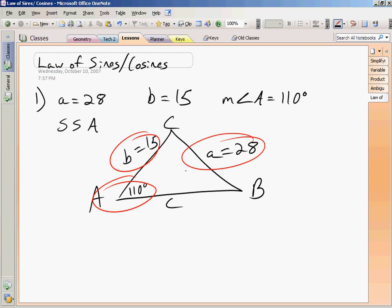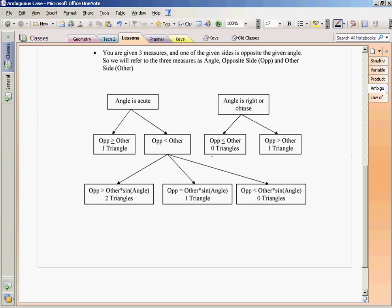So here I'm given side a, which is opposite the given angle, and then b, which is just going to be, in this example, the other side. So opposite is 28, and other is 15. So opposite is bigger than other, so that means, in this example, there's one triangle.